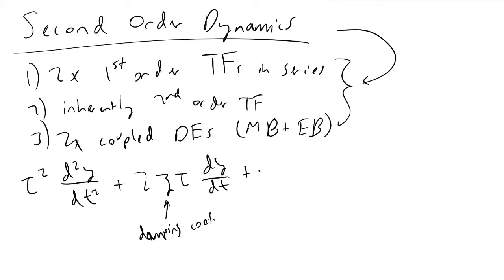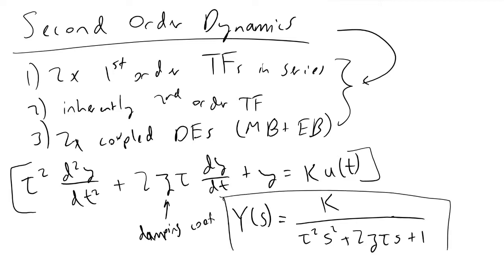This is equivalent to the gain k times some input u as a function of time. When we take the Laplace transform, we find that y(s) equals k divided by tau squared s squared plus 2 zeta tau s plus 1. These equations allow us to model the dynamics of a second-order transfer function.